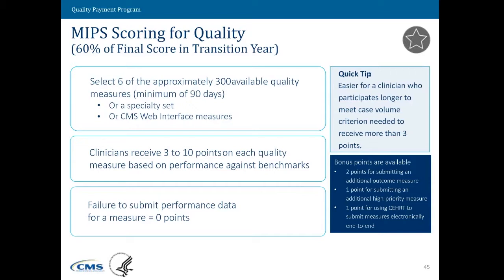We'll start with the quality performance category. For most people, this is going to be 60% of your final score. To recap, generally people have to submit approximately 60 measures from the available measures. When you submit a measure to us, whether it's a test or pick your pace, we're going to look at that measure and try to score it, and we're going to assign that measure somewhere between 3 to 10 points. At a minimum, if you submit a quality measure, we're going to give you 3 out of 10 points just for giving us the information.